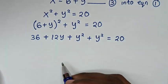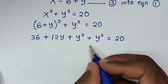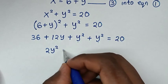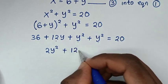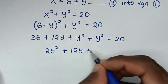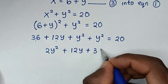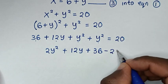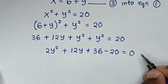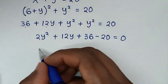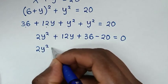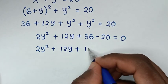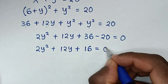Combining like terms, y squared plus y squared is 2y squared. Then plus 12y, plus 36. We move 20 to this side, so minus 20, giving us 2y squared plus 12y plus 16 is equal to 0.